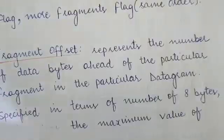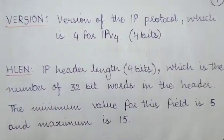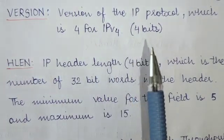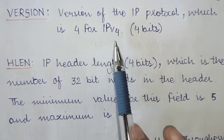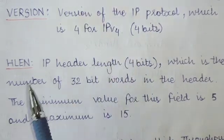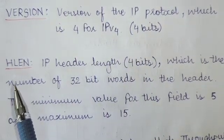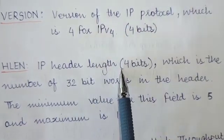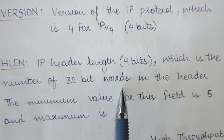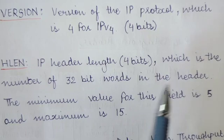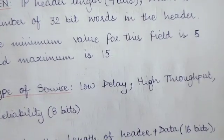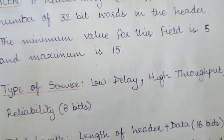The version field represents which version of the IP protocol is being used — here it is IPv4, so version four. Four bits are reserved for the version field. The HLEN field represents the header length, for which four bits are reserved. This is the number of 32-bit words in the header; the minimum value for this field is five and the maximum is fifteen.